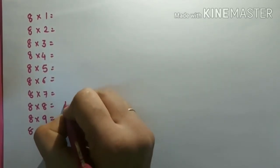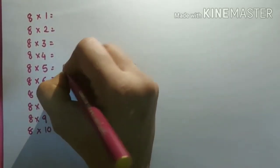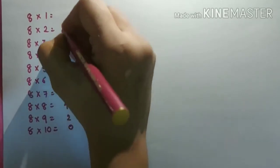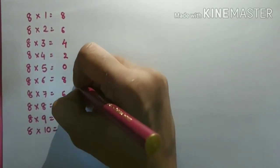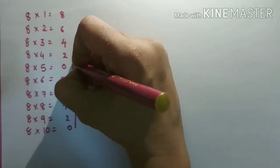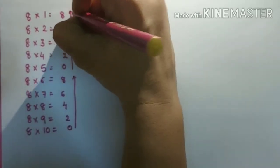2, 4, 6, 8. 0, 2, 4, 6, 8. 0, 2, 4, 6, 8. And again 0, 2, 4, 6, 8.